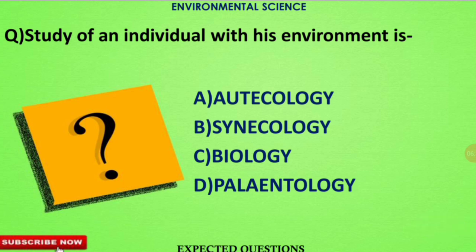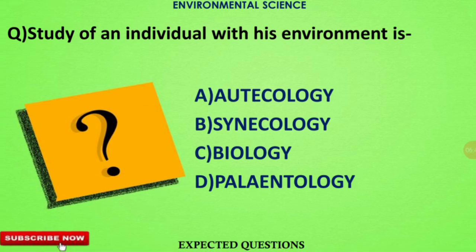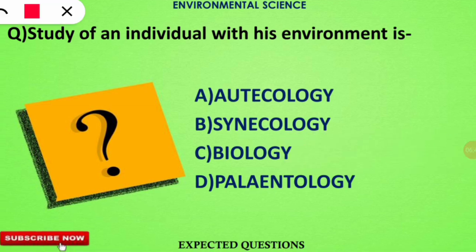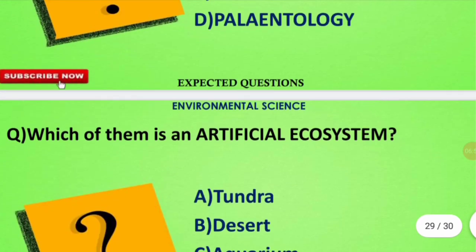The next question asks: the study of an individual organism with its environment is called what? The correct terminology for this kind of study is autecology.